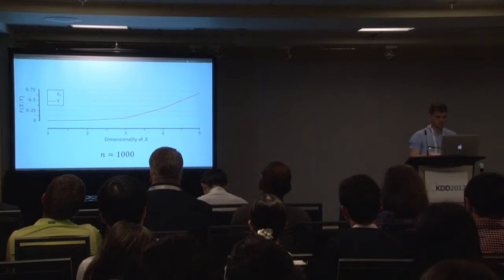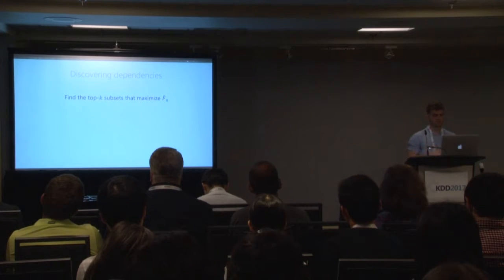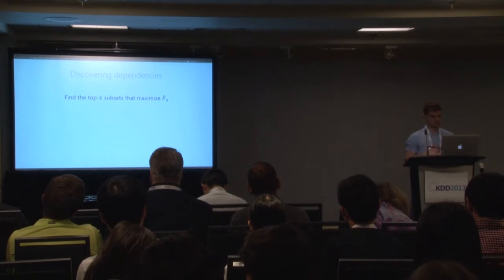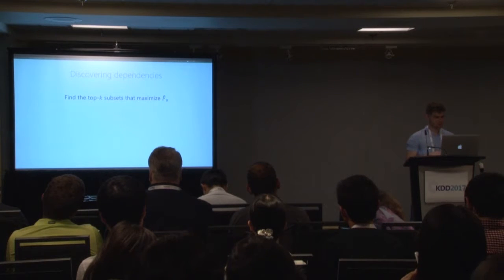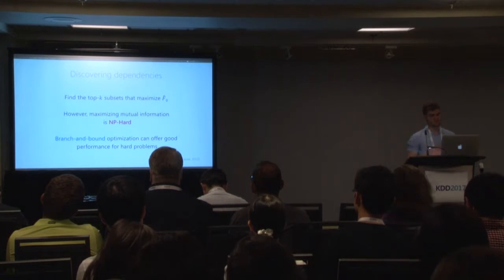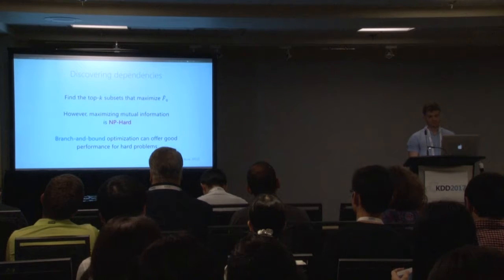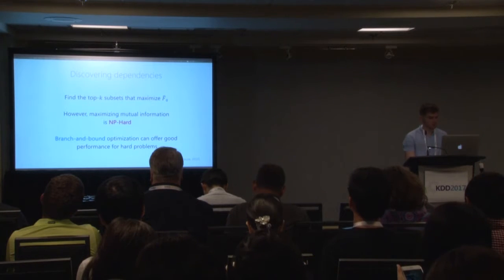Now I will focus on the discovery part. We want to find the top-k subsets that maximize the F0 score, allowing for alternative explanations for the user. However, maximizing mutual information is NP-hard, and since we also have the B0 term, it's very unlikely the problem becomes easier or solvable in polynomial time.